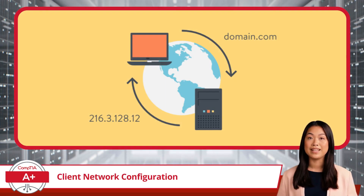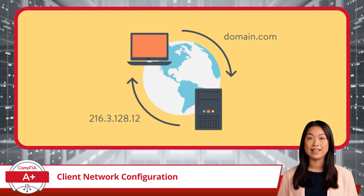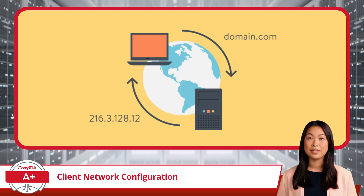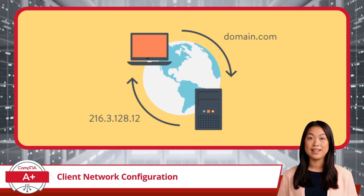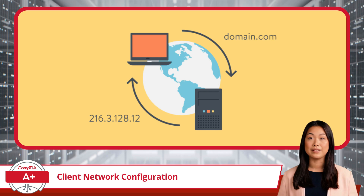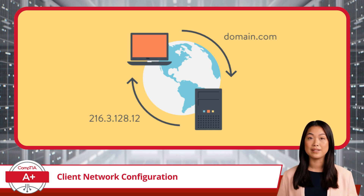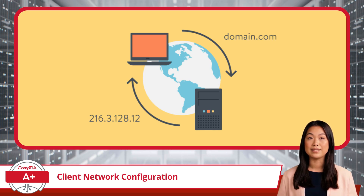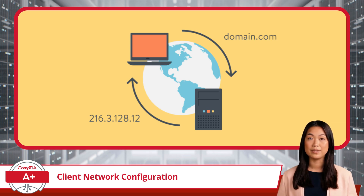DNS, or Domain Name System, is used for translating human-readable domain names like domain.com into IP addresses that computers can understand. When configuring DNS settings, you can specify primary and secondary DNS servers. The primary DNS server is queried first, and if it fails to respond, the secondary DNS server is used. Proper DNS configuration ensures that your network devices can resolve domain names and access internet resources efficiently. Think of DNS as the network's phone book — it helps your devices find each other without awkward introductions.